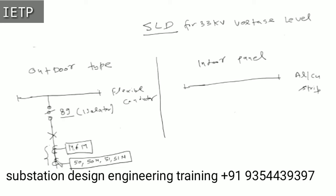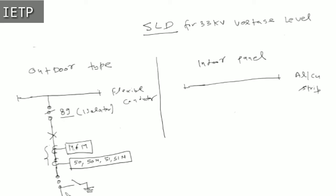So two CT cores are used here. After the CT, another isolator comes — with suffix A or B since it is near the bus, and then 89L on the line side. After that, we use an earth switch for isolation safety, then a lightning arrestor. This completes the SLD for the outdoor type switchyard outgoing feeder: bus bar → isolator (89B) → circuit breaker (52) → CT → isolator (89L) → earth switch → lightning arrestor → outgoing feeder.